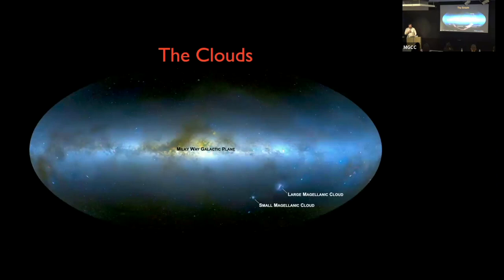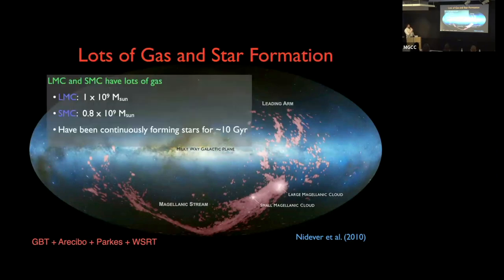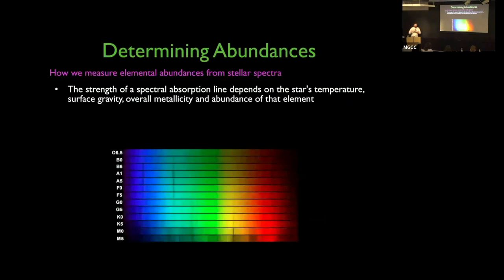If we put on our radio goggles we can see the Magellanic Stream, which is about a billion solar masses in gas trailing behind the Clouds. This alludes to their close interaction with each other and the Milky Way. They each have about a billion solar masses in gas, indicating they've been forming stars for a long time and accumulating chemical abundances.